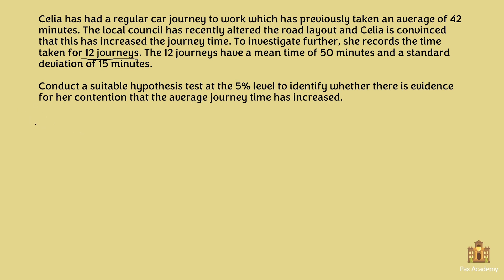The first thing to do is to state the null and alternative hypotheses. Celia originally says her journey to work takes an average of 42 minutes, so H0: μ = 42 minutes. The local council altered the road and Celia is convinced this has increased the journey time, so the alternative hypothesis is H1: μ > 42 minutes.